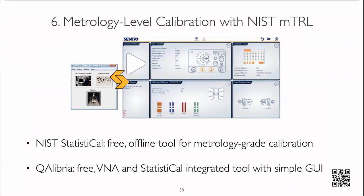To address metrological-level calibration accuracy and calculate and propagate uncertainties of probe-tip calibration, calibration algorithms and software developed by metrologists are available. One is a statistical free software package developed by the National Institute of Standards and Technology, available to everyone — though you need to be a metrology expert to operate it, and it cannot connect directly to a network analyzer as it's a data post-processing tool, not a live calibration interface for S-parameter and load pull measurements. The recommended approach is to use dedicated calibration software which is also available.